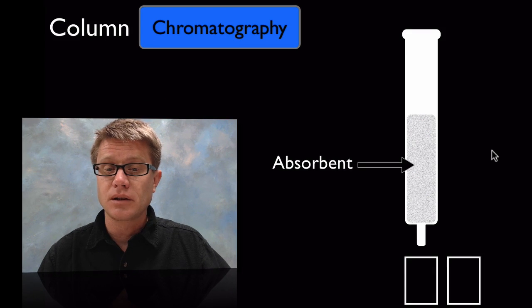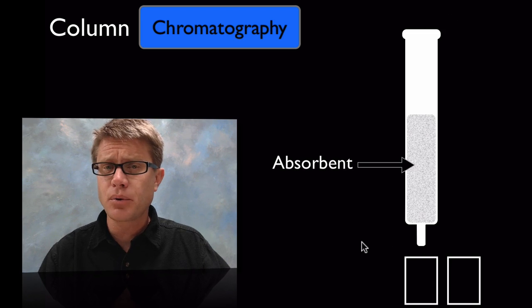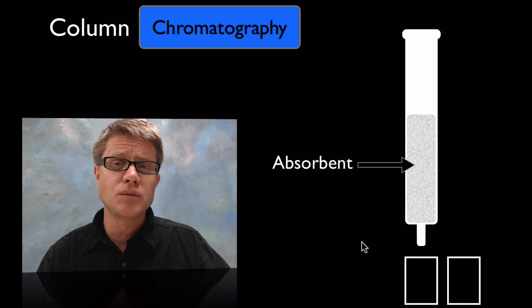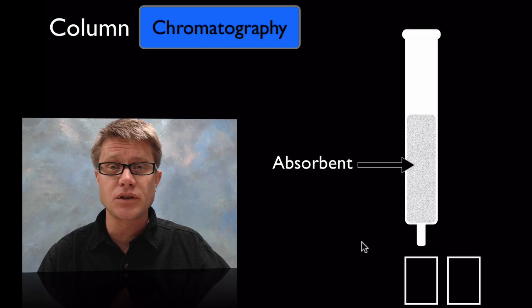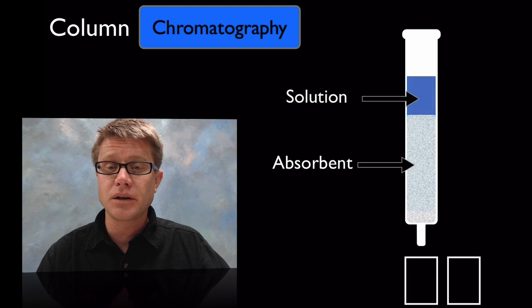Column chromatography is going to work in a little bit different way. What we'll use is a big column. So this is going to be a big glass column, and it's going to have an exit point at the bottom. We're going to put some absorbent inside there. Usually that's going to be like a silica gel, and then we'll put some aluminum oxide inside it. And then we're simply going to dump our solution up at the top. And timing is important when we're doing column chromatography.